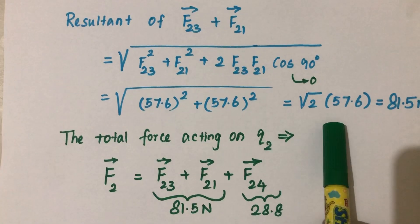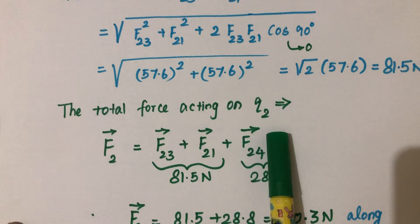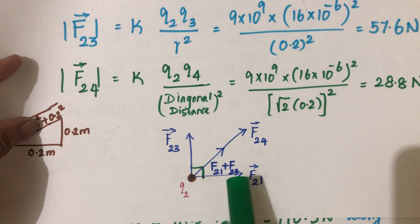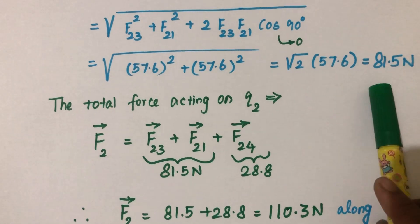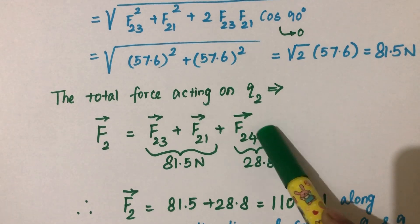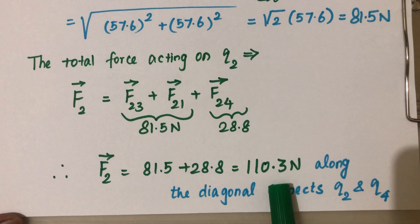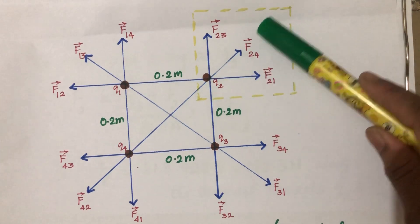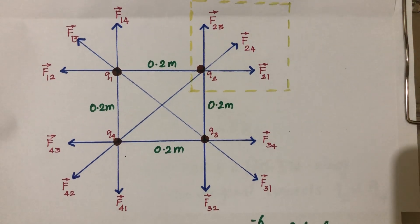The resultant of F21 and F23 is 81.5 newtons. Now we add this to F24 (28.8 N), since both act along the same diagonal direction. The total force acting on charge q2 is therefore 81.5 + 28.8 = 110.3 newtons. The direction of this total force is along the diagonal. Thank you so much.